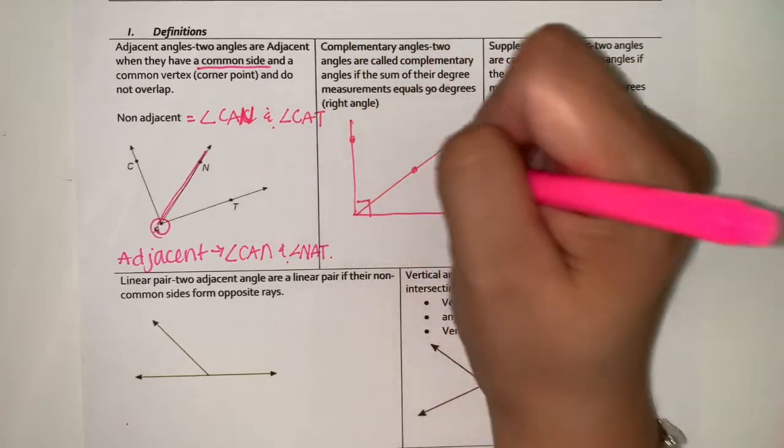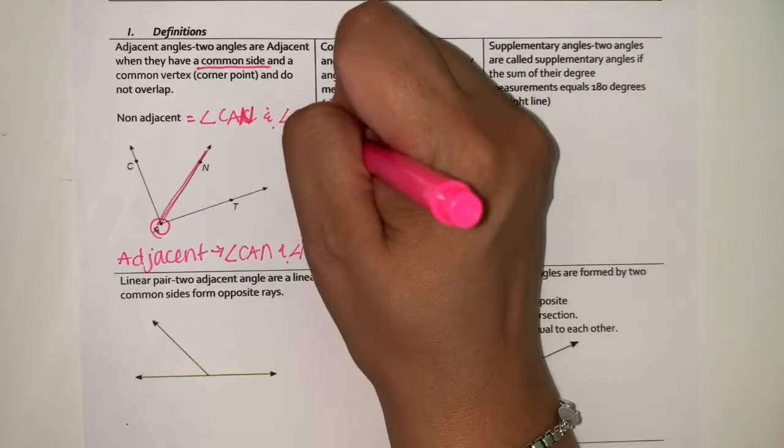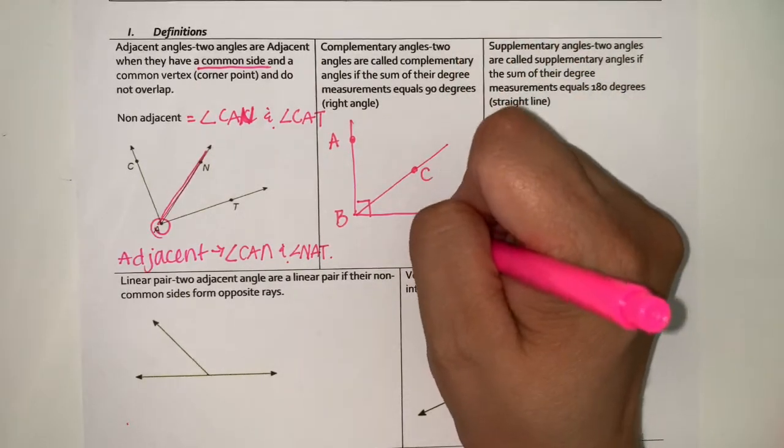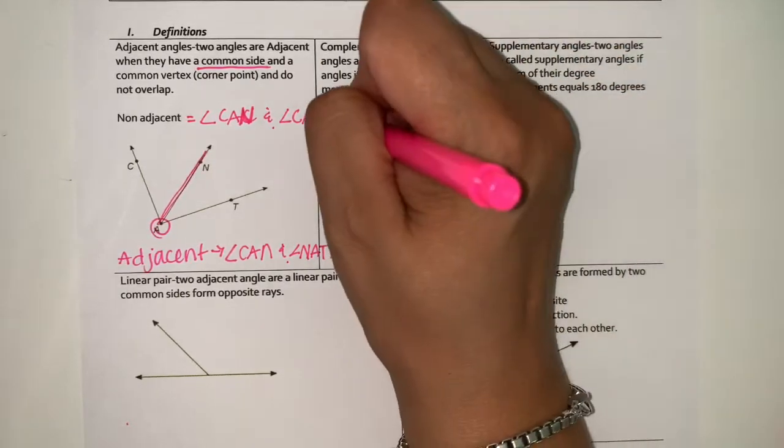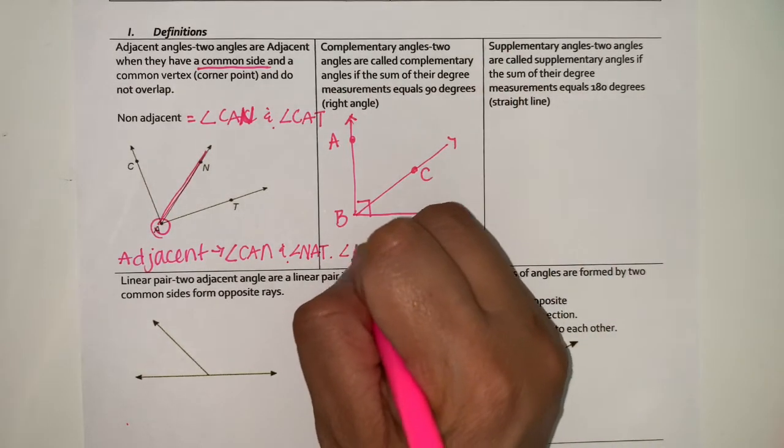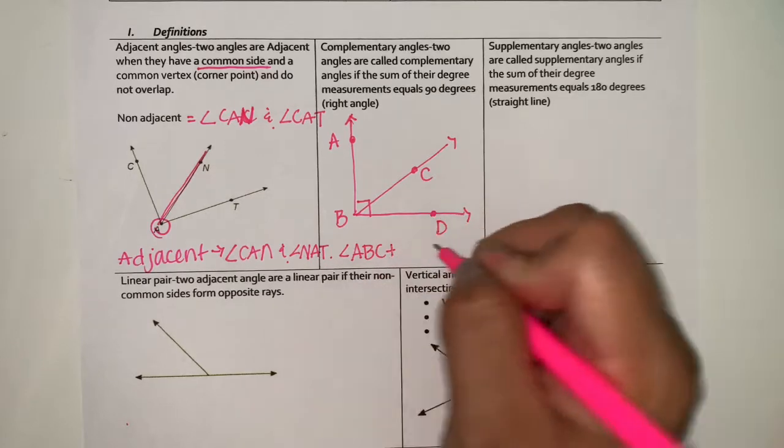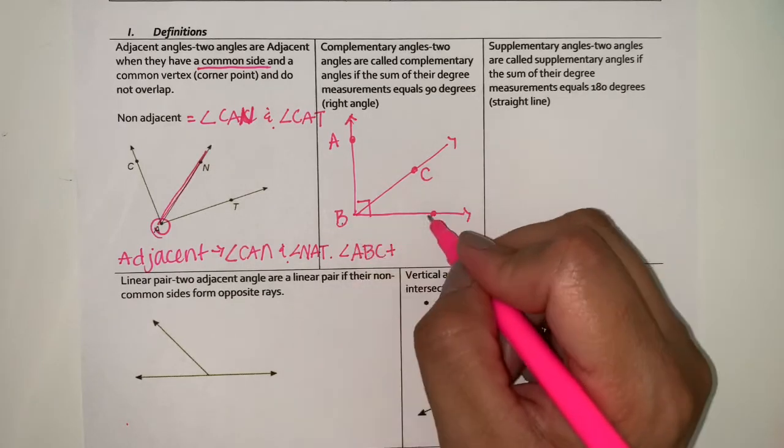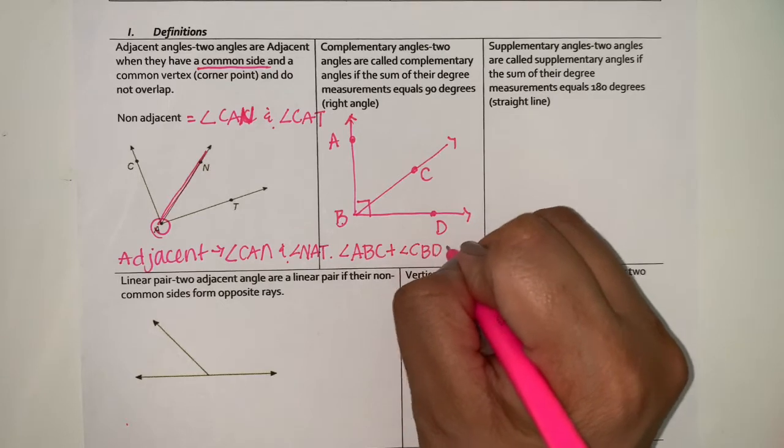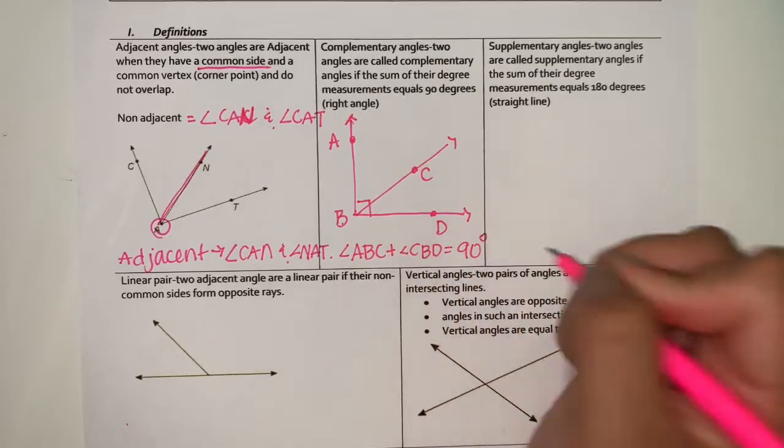And we have A, B, C, and D. What this is saying is angle ABC is added to CBD, and that is going to equal 90 degrees.